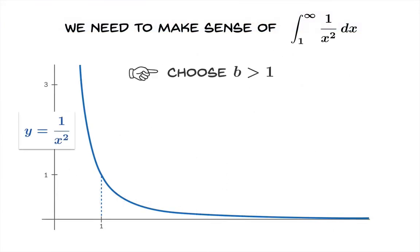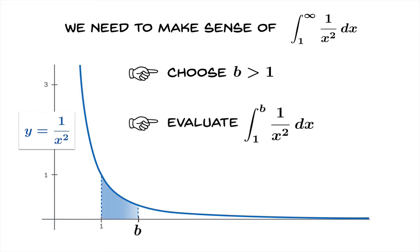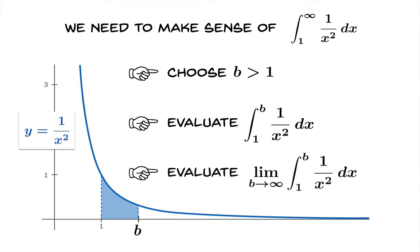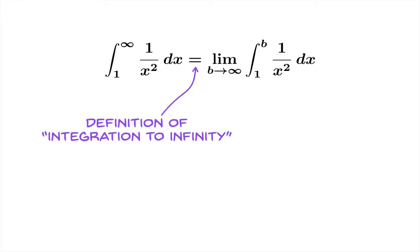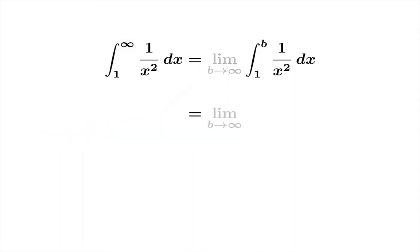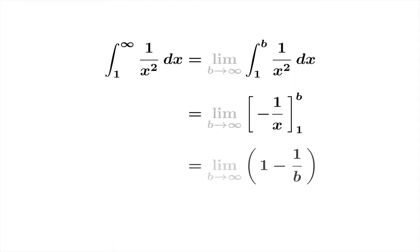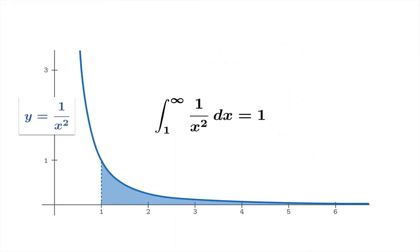So how do we play this game here? We choose some argument b greater than 1, evaluate the definite integral from 1 to b, and then let b go to infinity, looking at the limiting value of this definite integral. So we take the limit as b goes to infinity of the integral from 1 to b of 1 over x squared. An antiderivative of 1 over x squared is negative 1 over x. We evaluate at b and 1 and subtract, getting the quantity 1 minus 1 over b. The limiting value as b goes to infinity is clearly 1.